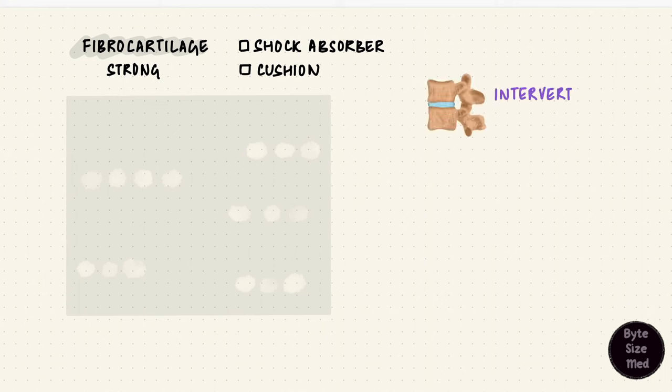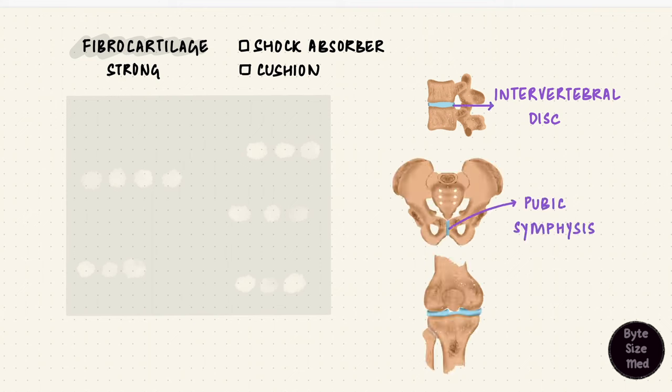Fibrocartilage is the last type and it is strong. It is a shock absorber and it also works like a cushion. The locations should make its functions more obvious. The intervertebral discs between the vertebrae of the vertebral column, the pubic symphysis, and the menisci of the knee joint. These are some examples for fibrocartilage.